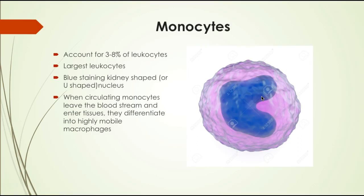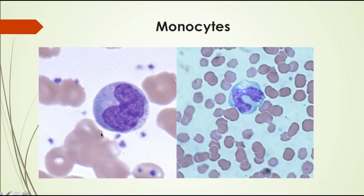Under the microscope, lymphocytes have a large dark nucleus surrounded by a clear cytoplasmic layer — the cytoplasmic ring distinguishes them from basophils, which lack this clear layer. Monocytes make up about 3 to 8% of leukocytes. They are the largest white blood cells and have a kidney-shaped or heart-shaped nucleus. They can leave the bloodstream and differentiate into highly mobile macrophages. On a slide, they appear large with no visible granules and a large kidney-shaped nucleus.